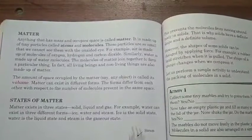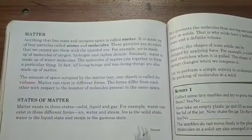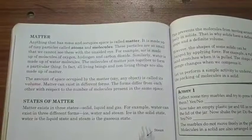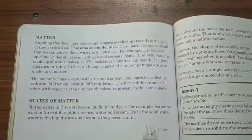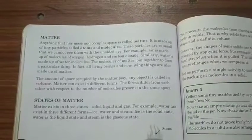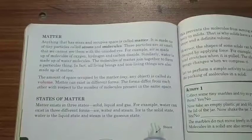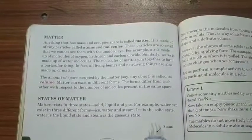Anything that has mass and occupies space is called matter. It is made up of tiny particles called atoms and molecules. These particles are so small that we cannot see them with the unaided eyes. For example, air is made up of molecules of oxygen, hydrogen and carbon dioxide.